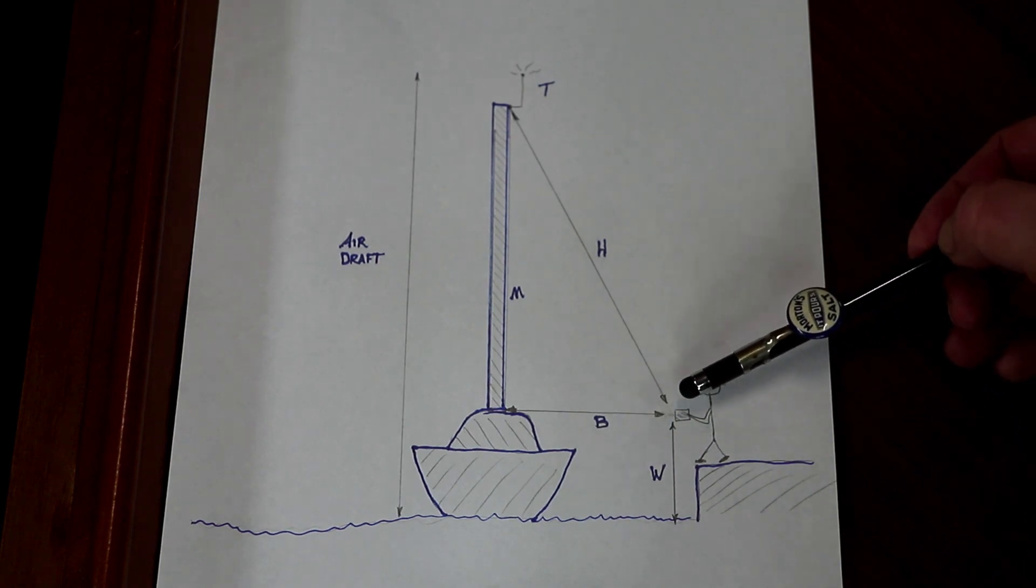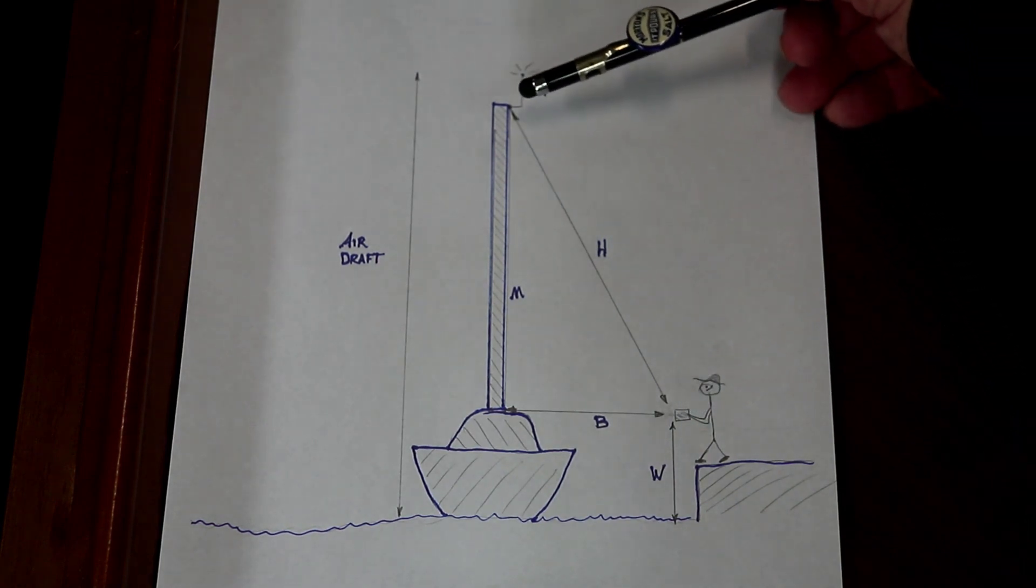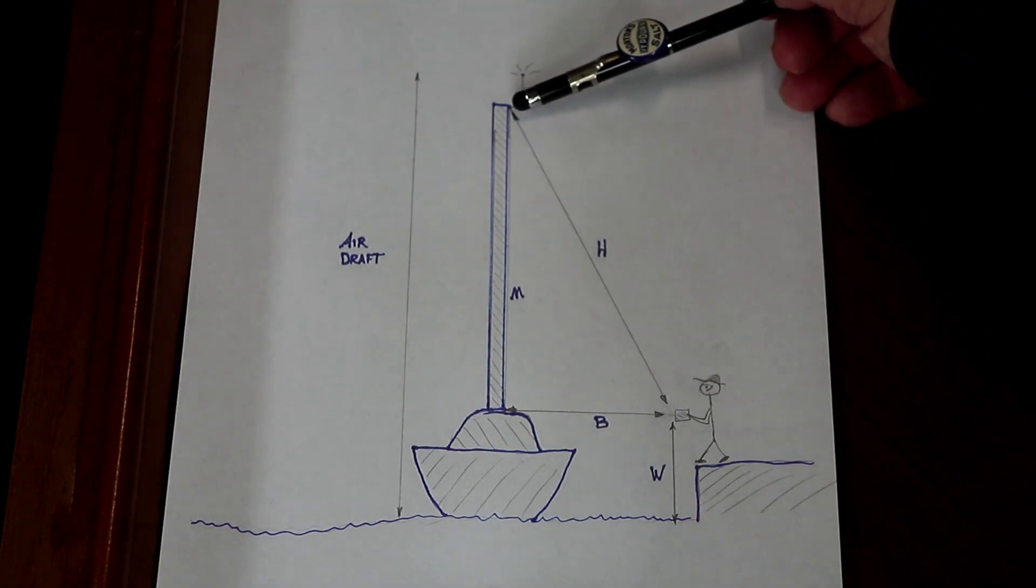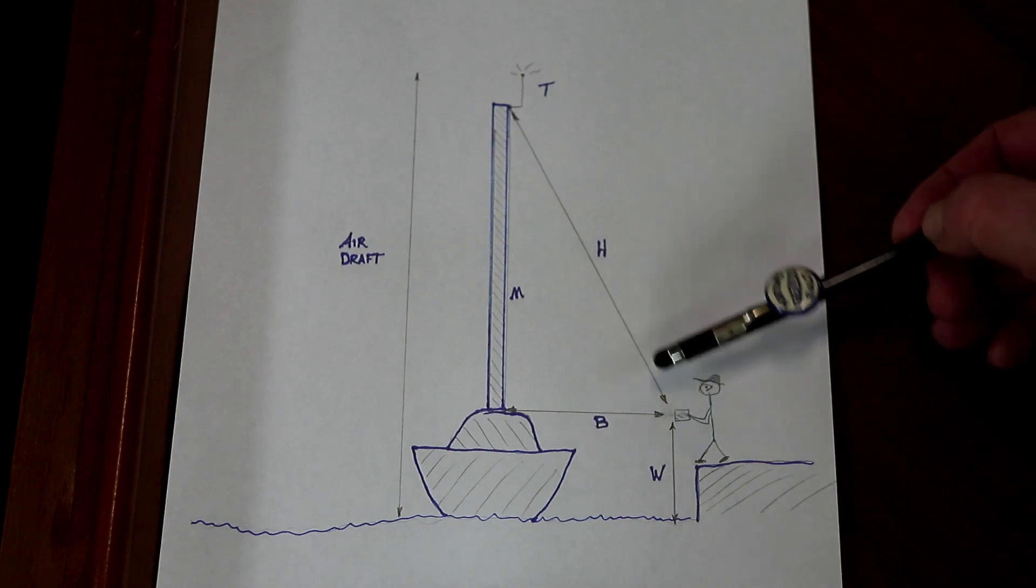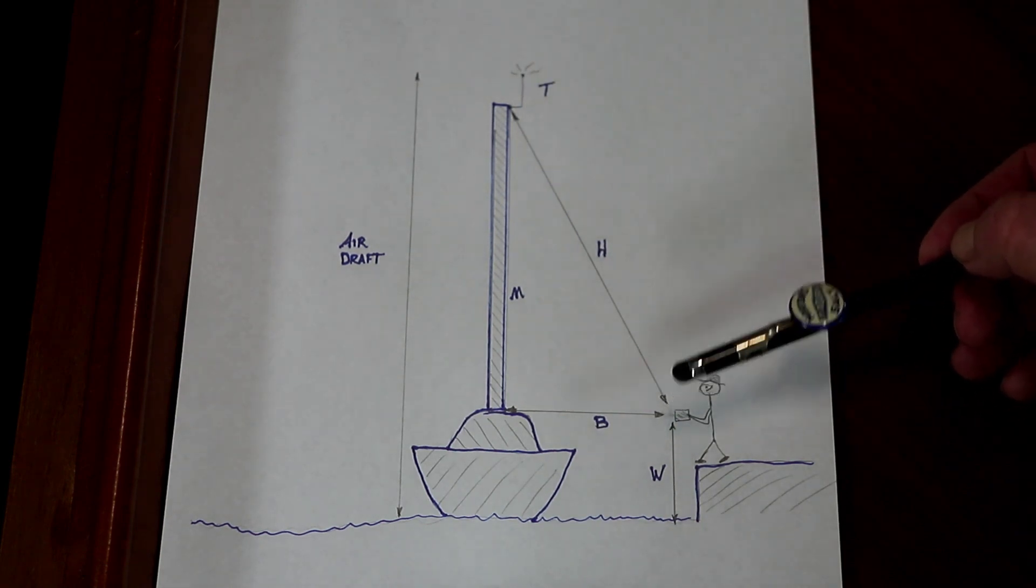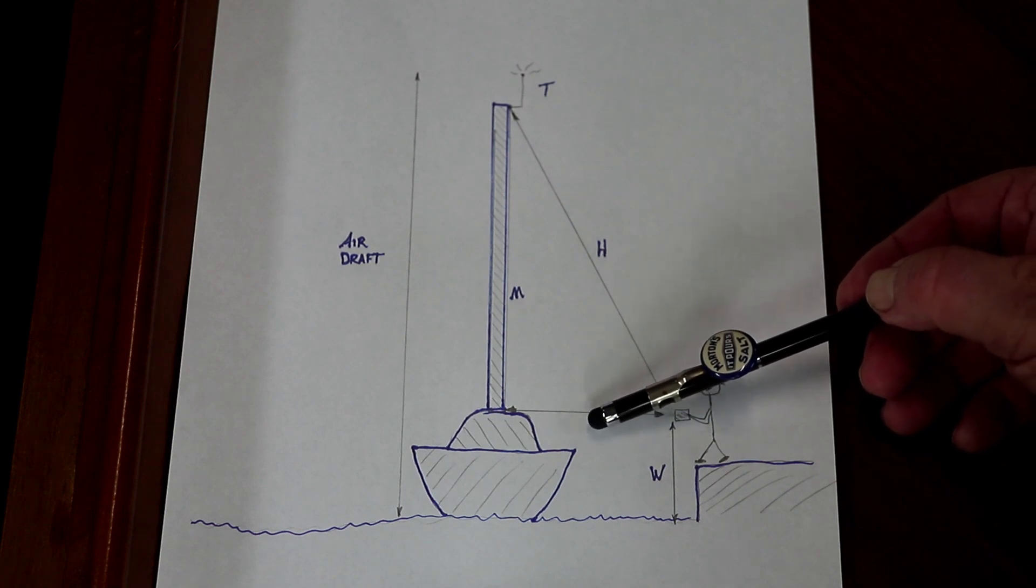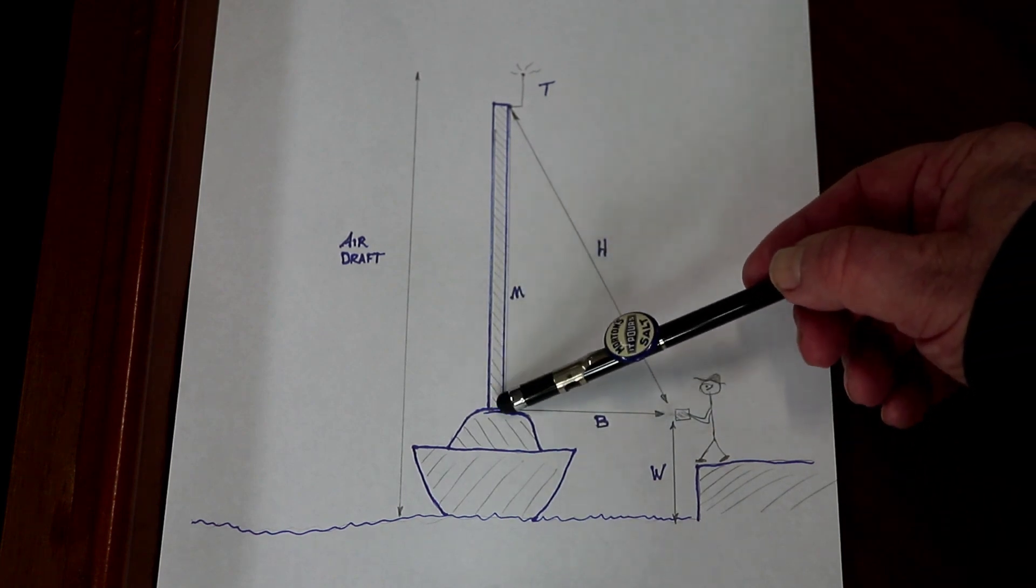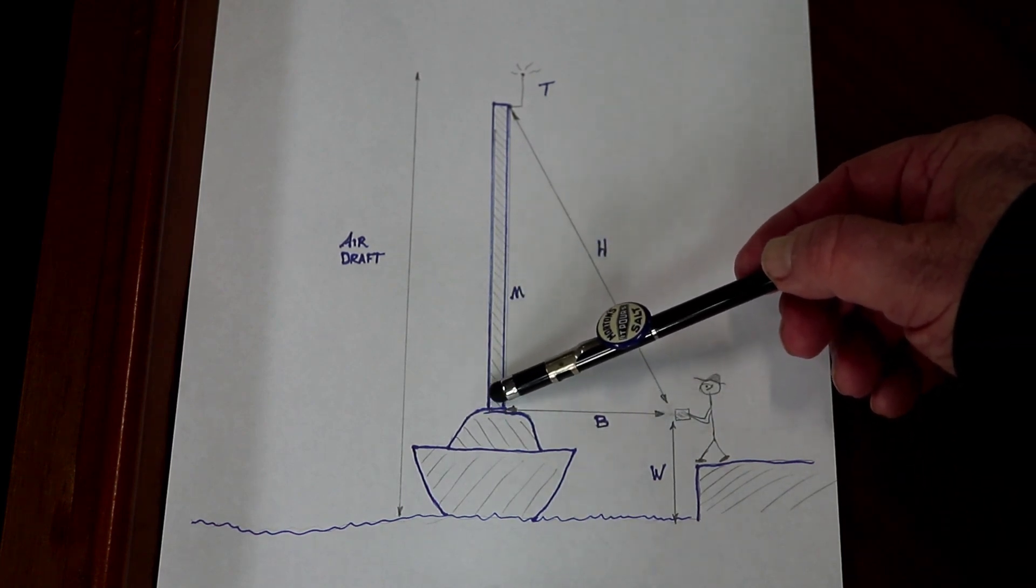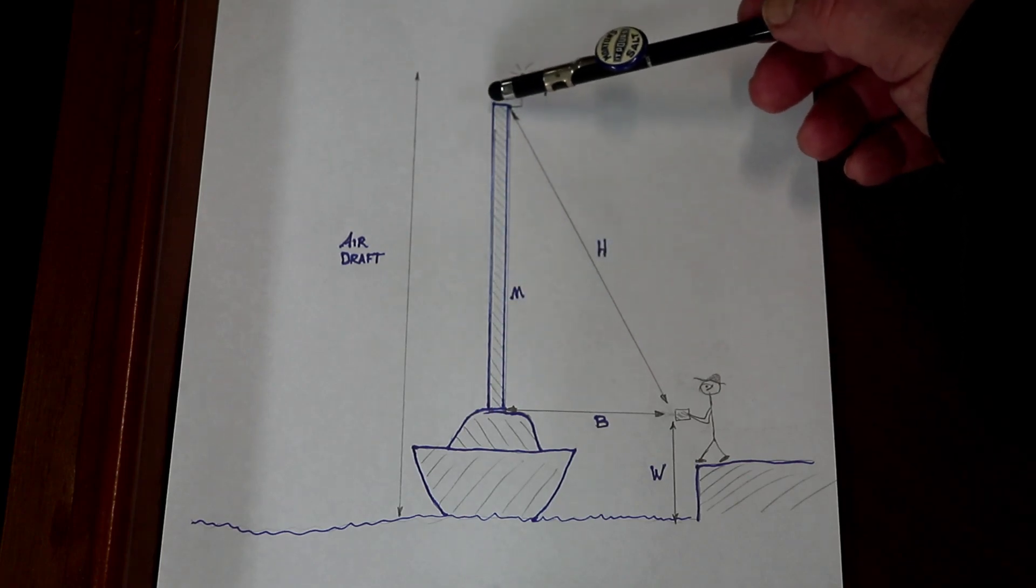Secondly, he's going to shoot the distance all the way up to the very top of the mast, holding the laser tool at the same position, and that gives us H, the hypotenuse of a triangle. You can see that we can then, using these two numbers, calculate M, the length of the mast from the top of the deck to the top of the masthead.